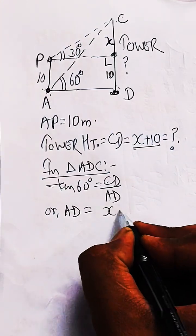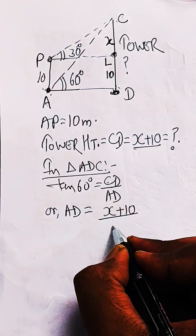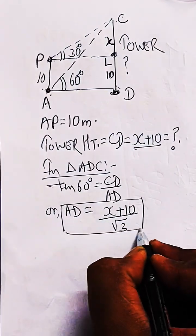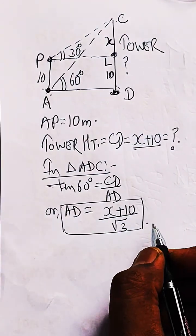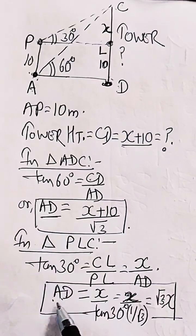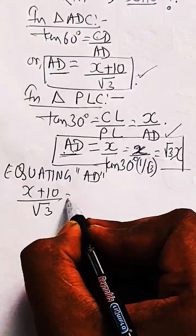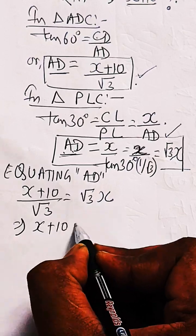Similarly, consider triangle PLC. In triangle PLC, tan 30 equals CL over AD. Now equate the value of AD to find out the value of X, which equals 5 meters.